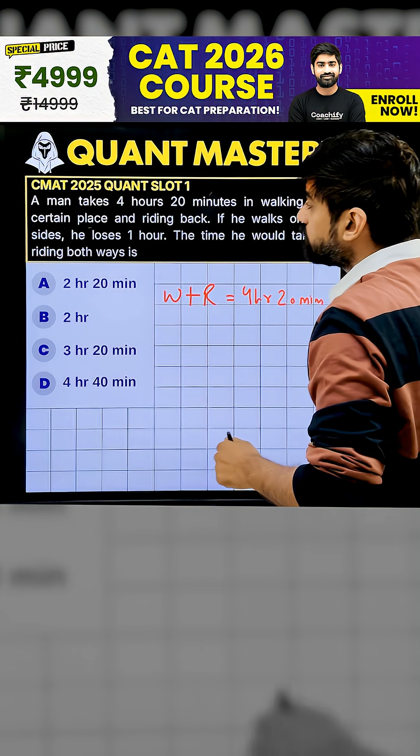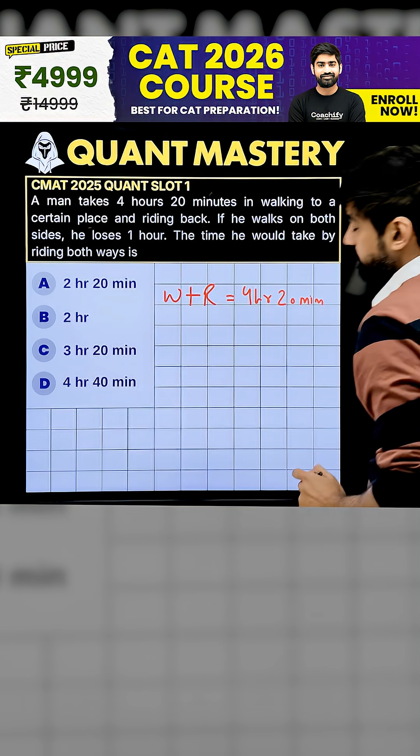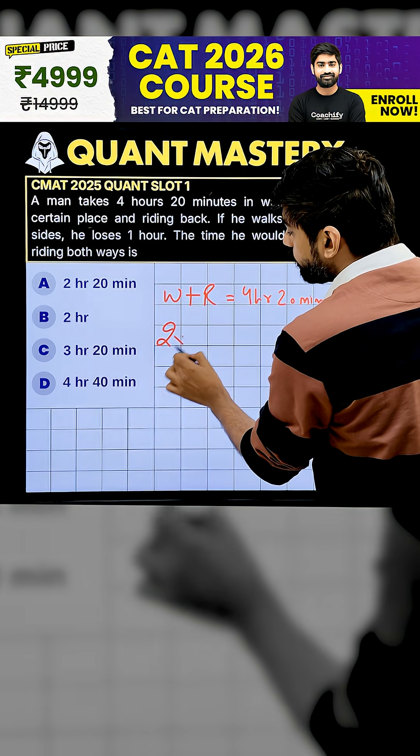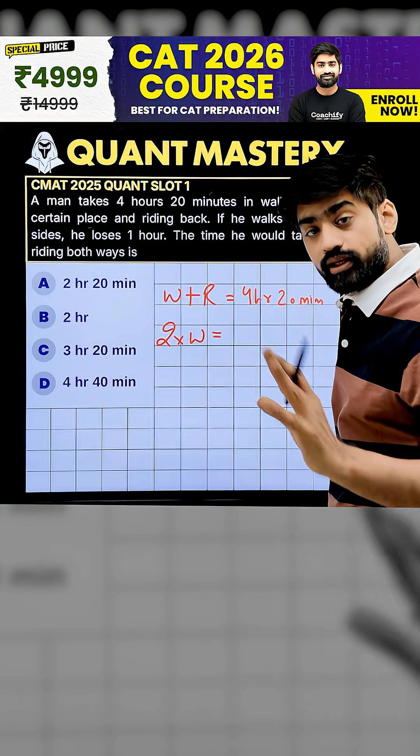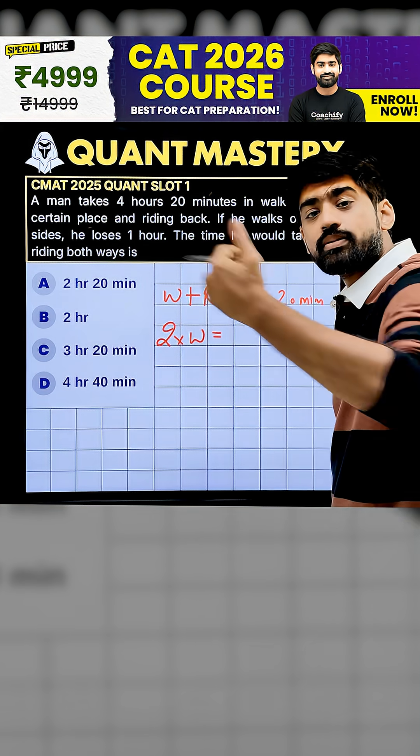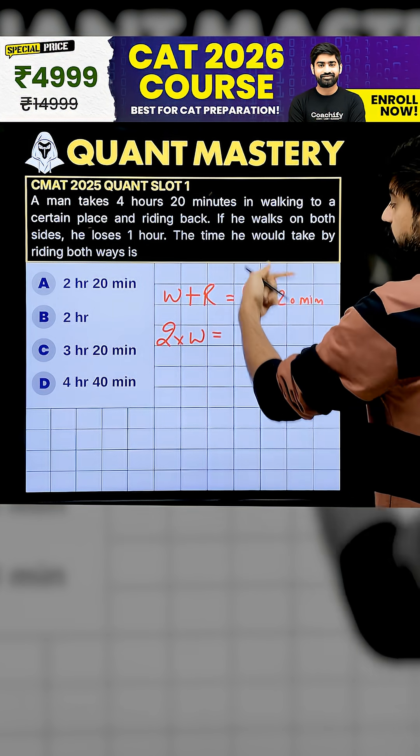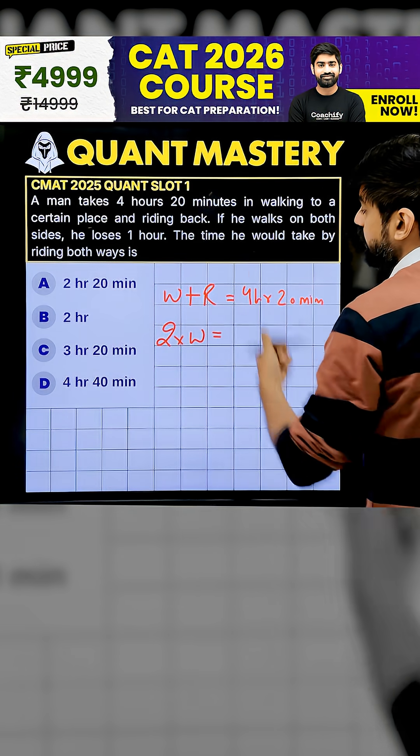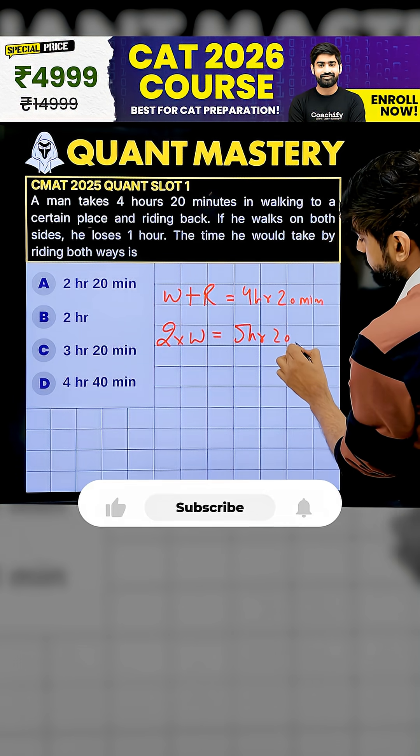Now, it says that if he walks on both sides, he loses 1 hour. So, two times of walking. If it's happening, if you walk the same time, in that case, 1 hour will increase. If you lose, it means increase. So, this becomes 5 hours 20 minutes.